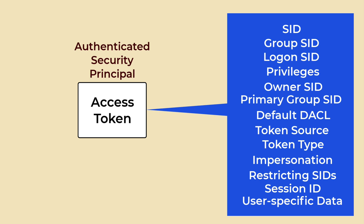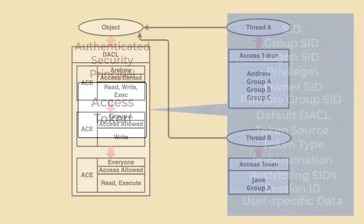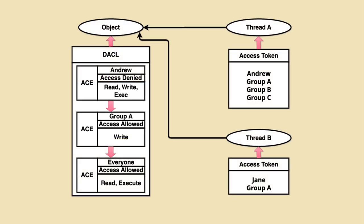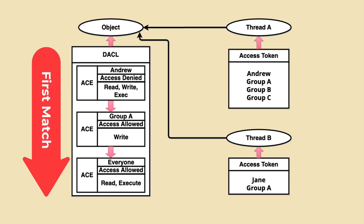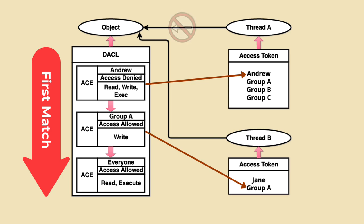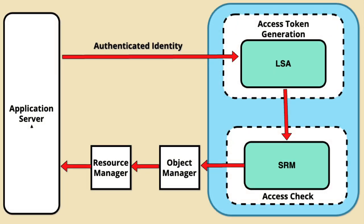These components collectively define the security context and determine what actions the user can perform on the system. They are essential for maintaining security and controlling access to resources in a Windows environment. The SRM then uses the access token to determine the user's access rights to resources throughout the session. Discretionary Access Control Lists (DACLs) define the access permissions for each resource. A DACL is a list of access control entries (ACEs), each specifying the access rights granted or denied to a particular security principle. When a user or process attempts to access a resource, the SRM compares the access token with the DACL to determine whether access should be granted or denied. The SRM enforces security policies by performing access checks and ensuring that all access to system resources is authorized according to the defined security policies.